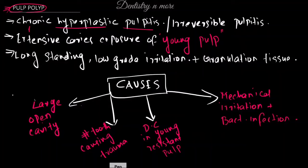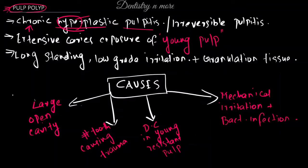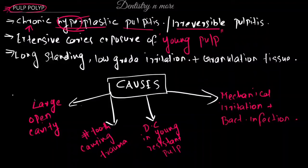Its nature is chronic and it is hyperplastic — meaning there is an overgrowth and inflammation of the pulp. So chronic hyperplastic pulpitis is chronic in nature; it involves overgrowth of cells as a reaction to inflammation of the pulp. It is an irreversible type of pulpitis.